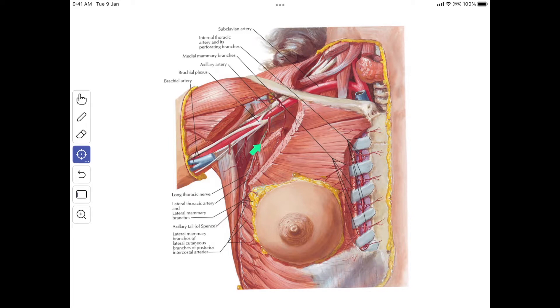This is the lateral thoracic artery, which is a branch from the second part of the axillary artery. The lateral thoracic artery provides lateral mammary branches, which supply the lateral part of the mammary gland.